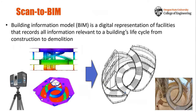There have been a lot of efforts to address those issues, such as green building certification and smart buildings. Another way to address this is by using the building information model, or BIM. A building information model is a representation of a facility that records all information relevant to a building's life cycle from construction to demolition. The BIM that is particularly created after the construction stage is called an as-built BIM.